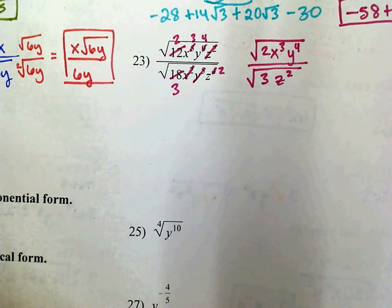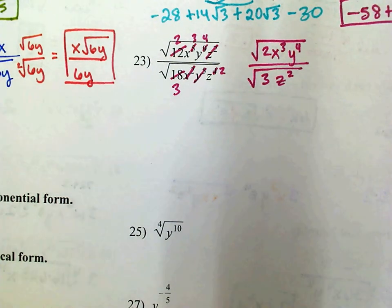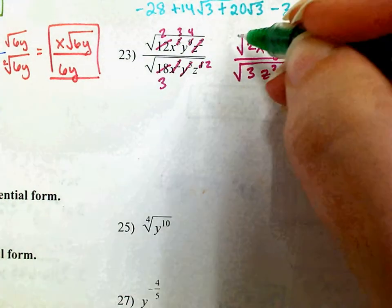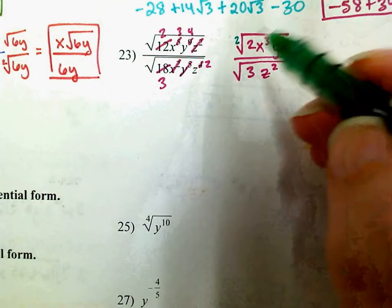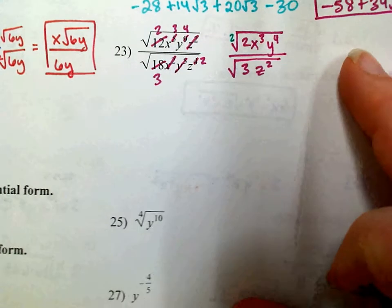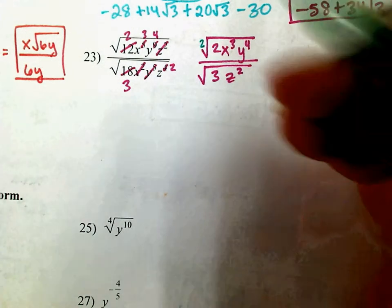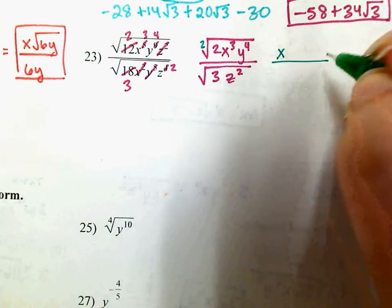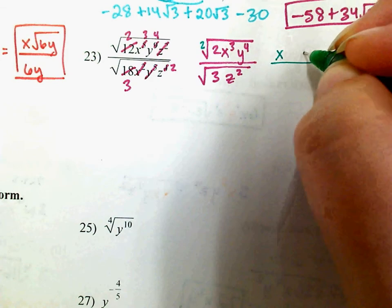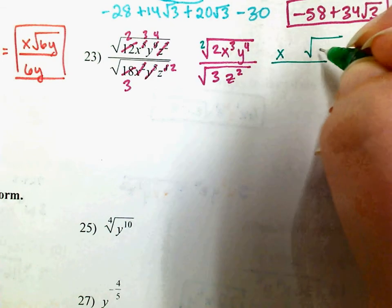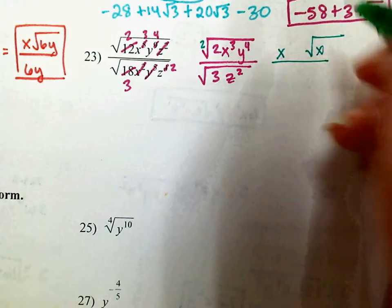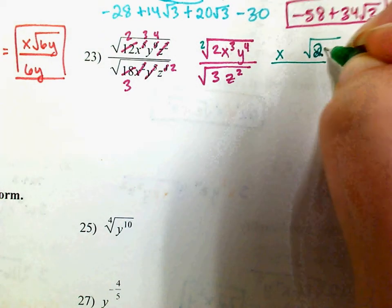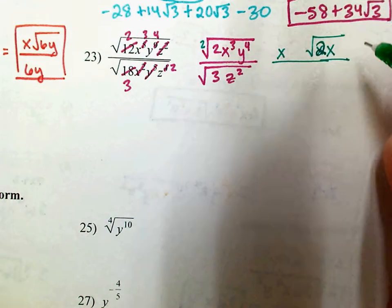In the numerator, I'm going to simplify the square root. I want to simplify before I rationalize, see if there's anything I can simplify. 2 goes into 3 one time, so I know there's an x that can come out, leaving me with an x, because 2 goes into 3 one time with 1 left over. I can't do anything to the 2, so I'm going to leave the 2 in there and the x.